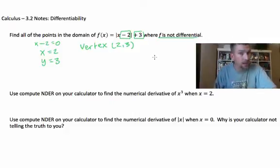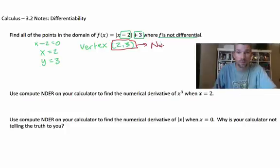So when I ask you, find all the points in the domain where we aren't differentiable, we're not differentiable at this point right here at (2, 3). We are not differentiable. We cannot take a derivative at that point.